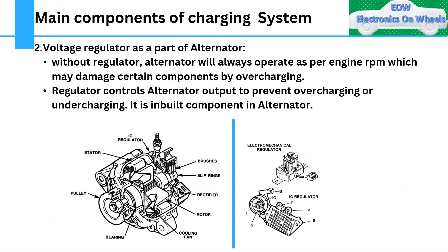The voltage regulator is an inbuilt part of the alternator. Without the regulator, the alternator would always operate based on engine RPM, which could damage components through overcharging or undercharging. The regulator controls the alternator output to prevent this. Since engine RPM changes with acceleration, higher RPM would generate more current and voltage — the regulator keeps the output within a safe range. This is what the voltage regulator looks like in IC form.